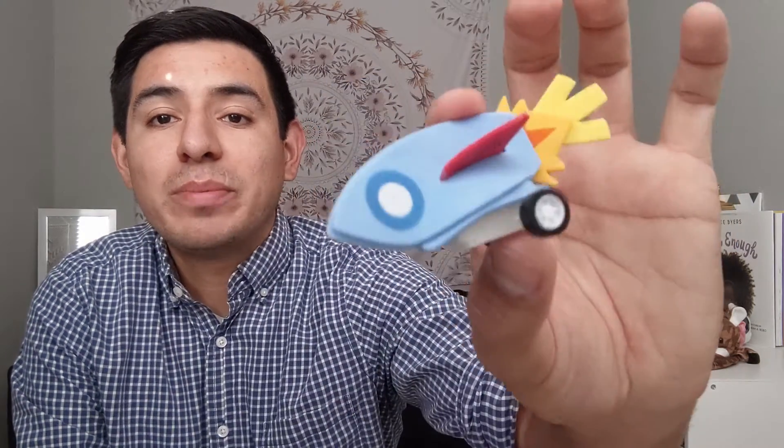Hi everyone, Mr. Miguel from McBee here. Today I'm going to show you how to assemble your own pullback rocket that you'll find in our Club on the Go bags. So just follow along and I'll show you how to do it.